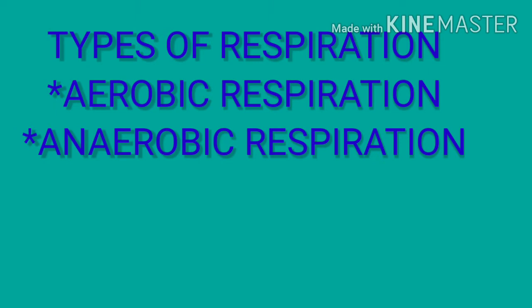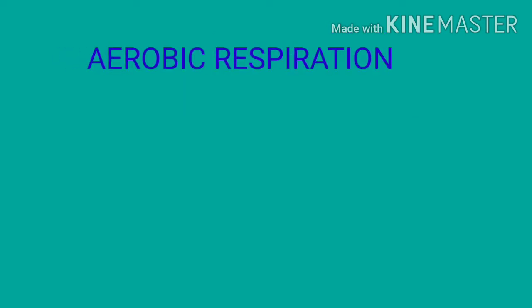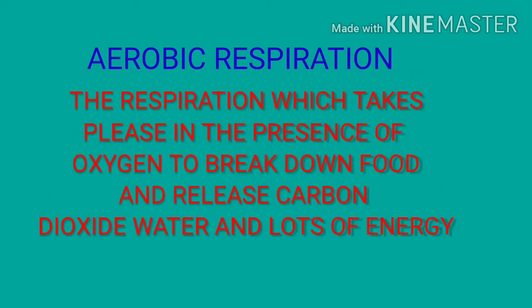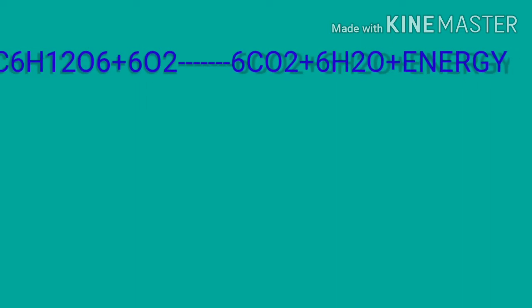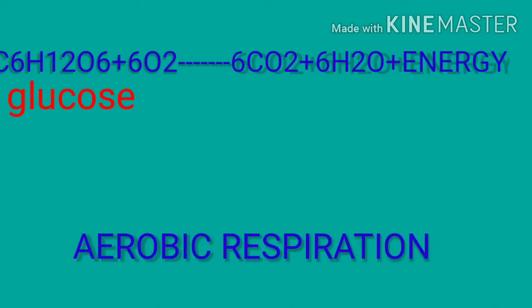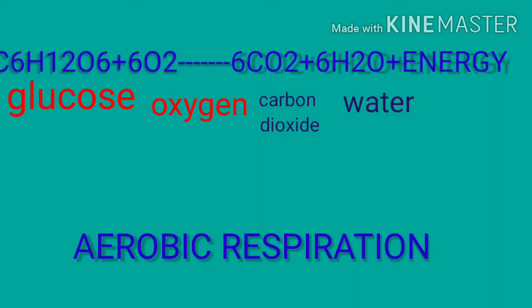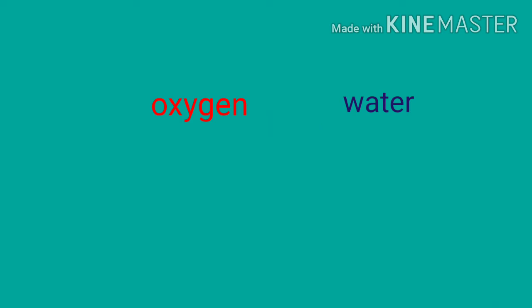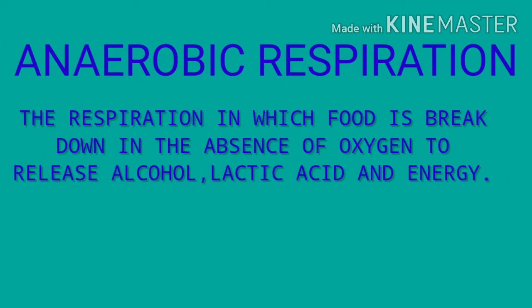Now, the types of respiration: aerobic and anaerobic respiration. Aerobic respiration is the process in which oxygen is utilized to break down food and release carbon dioxide, water, and lots of energy. The chemical equation of aerobic respiration is: C6H12O6 + 6O2 → 6CO2 + 6H2O + energy. Aerobic respiration takes place in the mitochondria, where energy is stored as ATP.